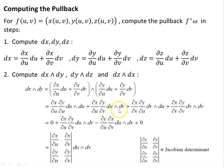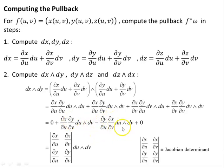The determinant of all this is the Jacobian determinant — the determinant of the Jacobian of the transformation — times du∧dv. So dx∧dy is simply the Jacobian determinant times du∧dv. By the same pattern, dy∧dz gives the corresponding Jacobian determinant times du∧dv, and dz∧dx gives its corresponding Jacobian determinant times du∧dv.